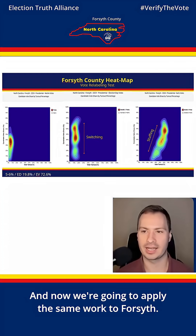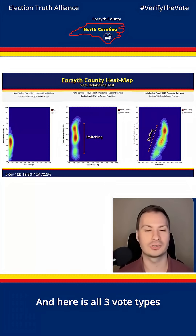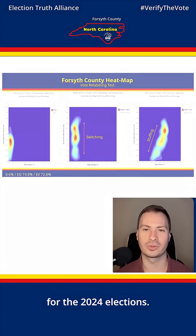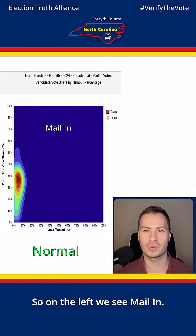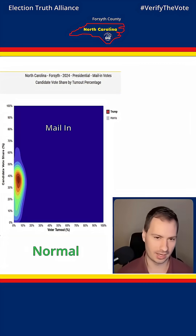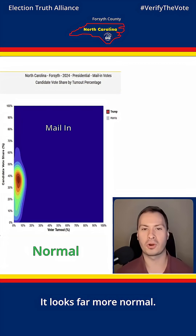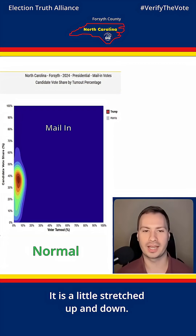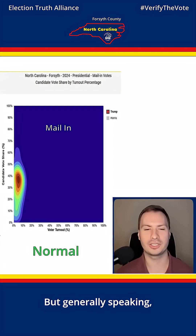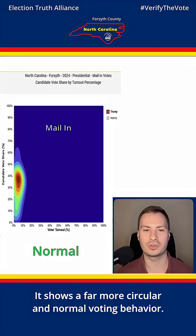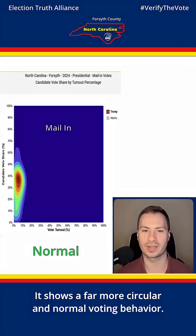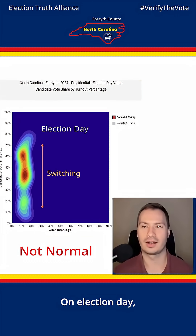Now we're going to apply the same work to this county, and here are all three vote types for the 2024 election. On the left we see mail-in — it looks far more normal. It is a little stretched up and down, but generally speaking it shows a far more circular, normal voting behavior.